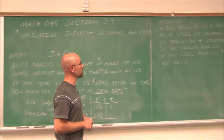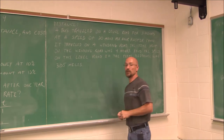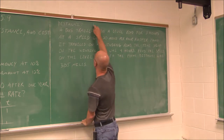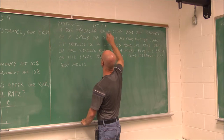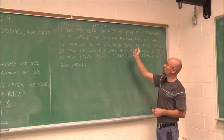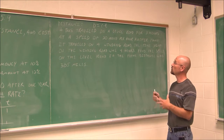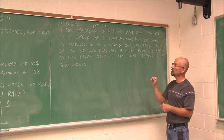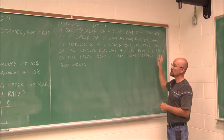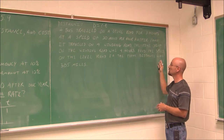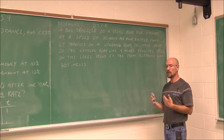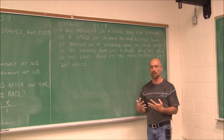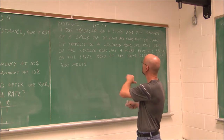Let's look at another example dealing with distance. We want to recall the distance formula: distance equals rate times time. A bus traveled on a level road for three hours at a speed 20 miles per hour faster than it traveled on a winding road. The time on the winding road was four hours. Find the speed on the level road if the total distance was 305 miles. Sometimes making a drawing helps visualize the problem.